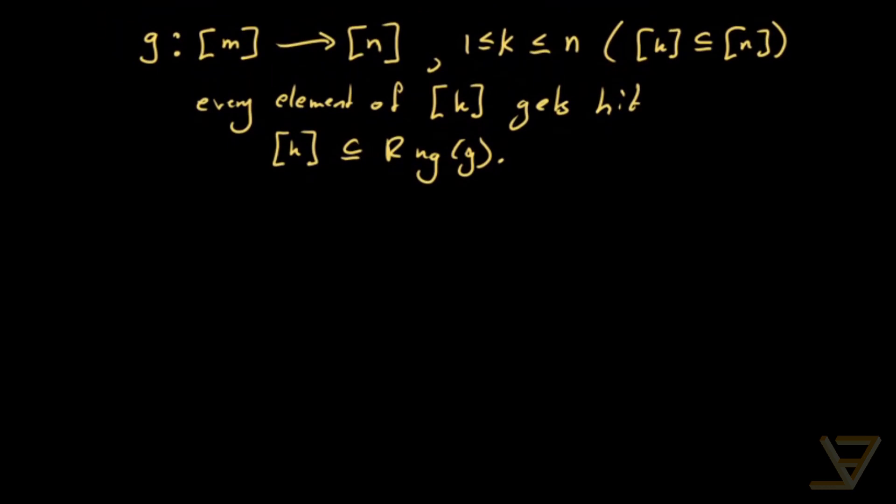We're going to need a couple of tools to prove this formula that we're going to be deriving for the number of such functions. First of all, we need the principle of inclusion exclusion. So we have that the cardinality of the union from k equals to 1 through n of the Ak, so the Ak are finite sets, is equal to the following complicated looking sum.